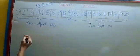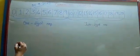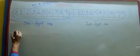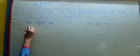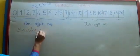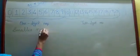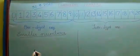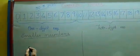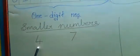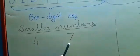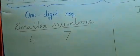Now we are going to compare smaller numbers and bigger numbers. We will start with comparing two one-digit numbers. Let's look at 4 and 7. Both 4 and 7 are one-digit numbers.